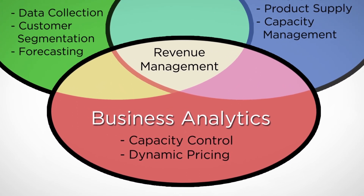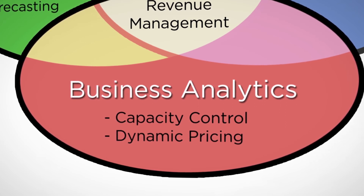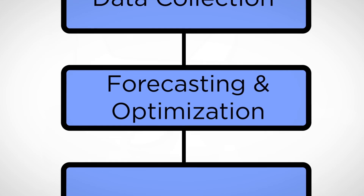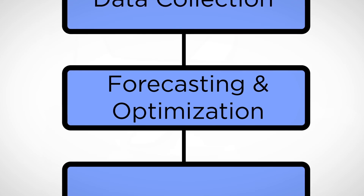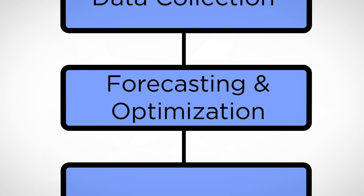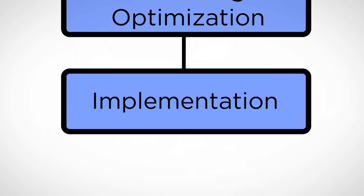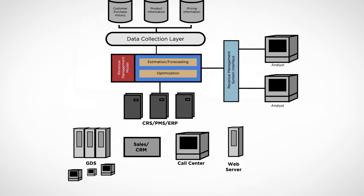Finally, the third component is what I call the business analytics component. Revenue management, at the end of the day, is a system with different components. The first is a data collection component — if you're going to understand and segment customers, you need sufficient data. The second and most important component is the revenue management piece itself: the forecasting piece that creates customer segmentation, and the optimization piece where resource allocation is done effectively. The last piece takes these recommendations and implements them in the field. Revenue management is a system that enables companies to do massively detailed decision-making in real time.